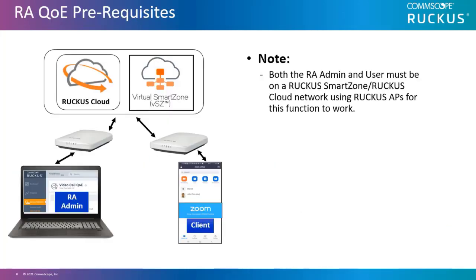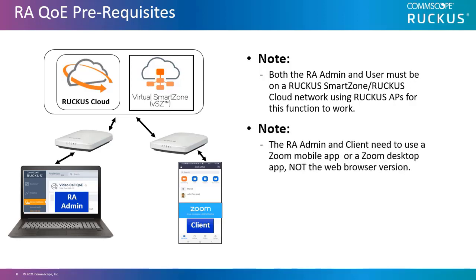To use this service, there are some prerequisites. Both the RA admin and the user must be on a Ruckus SmartZone or Ruckus Cloud network using Ruckus APs for this function to work. The RA admin and the client need to use a Zoom mobile app or a desktop app, not a web browser version.